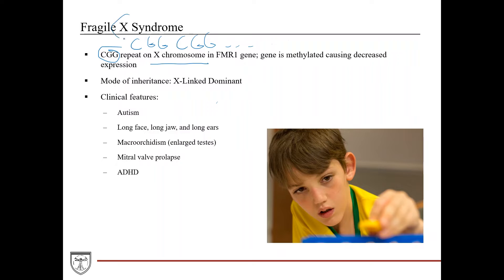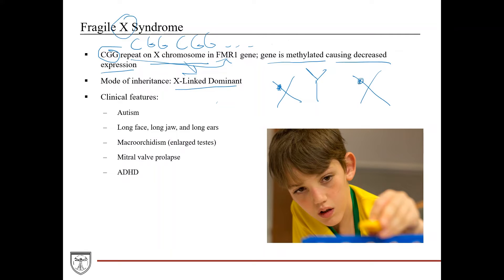Fragile X is on the X chromosome, which is easy to remember. It's an X-linked dominant disorder. The repeat occurs in the FMR1 gene, which is required for normal development of connections between neurons, so patients present with neurobehavioral problems. The gene is also methylated, causing decreased expression as a result of this repeat. Since it's X-linked dominant, males will have a much more severe presentation — they inherit the mutated X and a Y — whereas females inherit one mutated X but also a normal X chromosome, which helps downplay the severity.